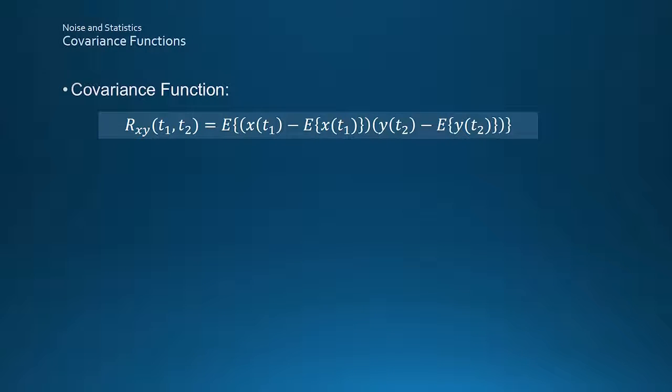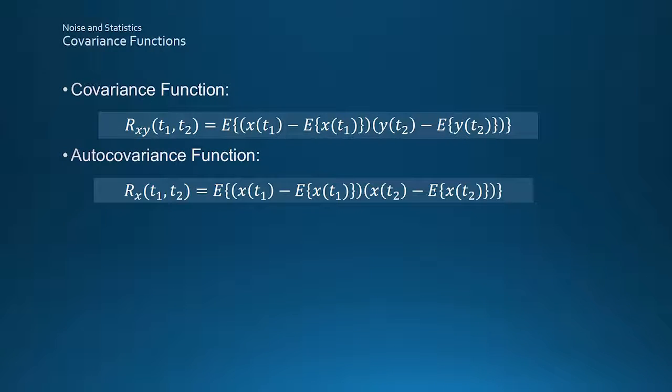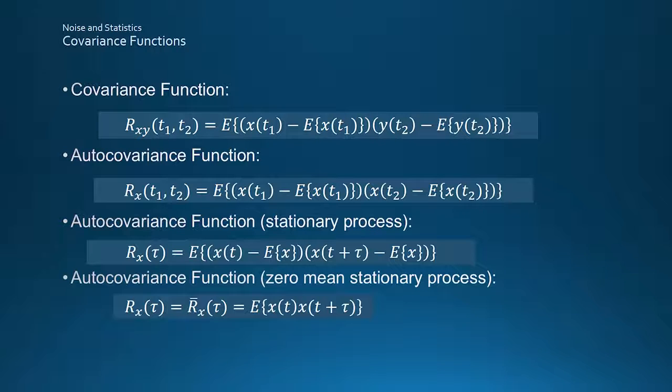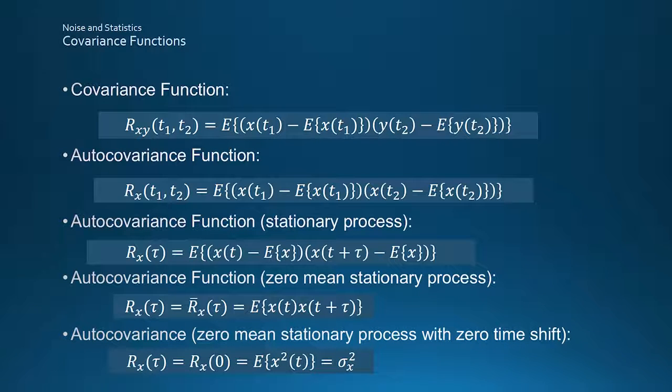The cross and autocorrelation functions are correlations corrected for the mean values of the signals, shown here without the flat hat over the R. For stationary processes, the autocovariance, like the autocorrelation, only depends on time lag tau, and for zero mean processes the correlation and covariance functions are identical. Finally, the special case for zero time lag again reduces to the signal strength, or variance, sigma squared.